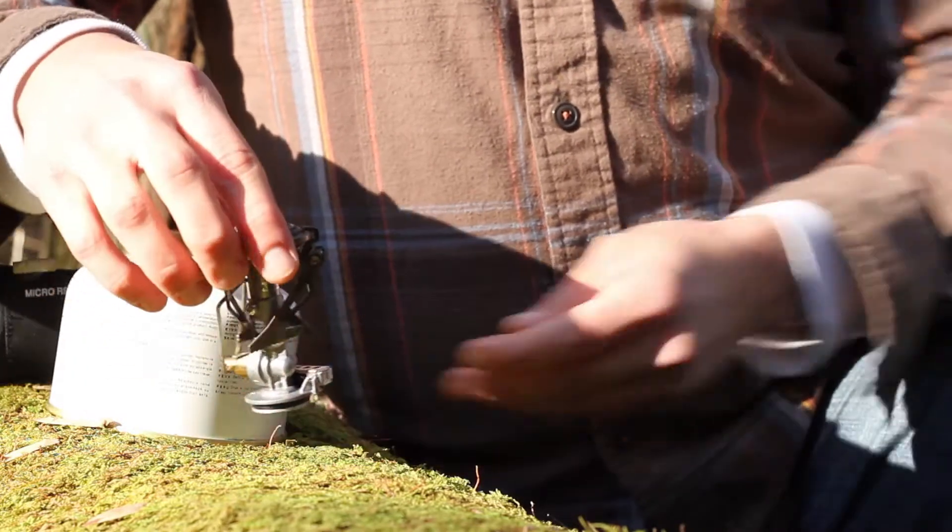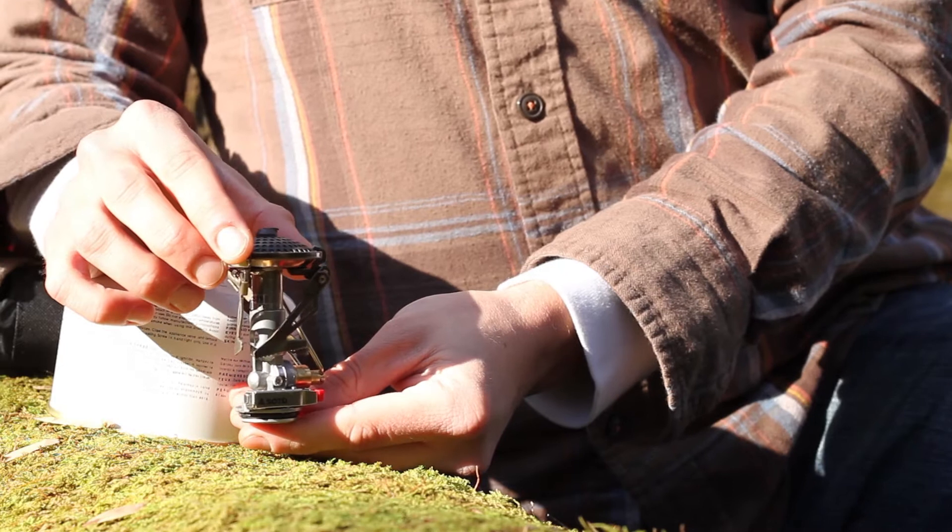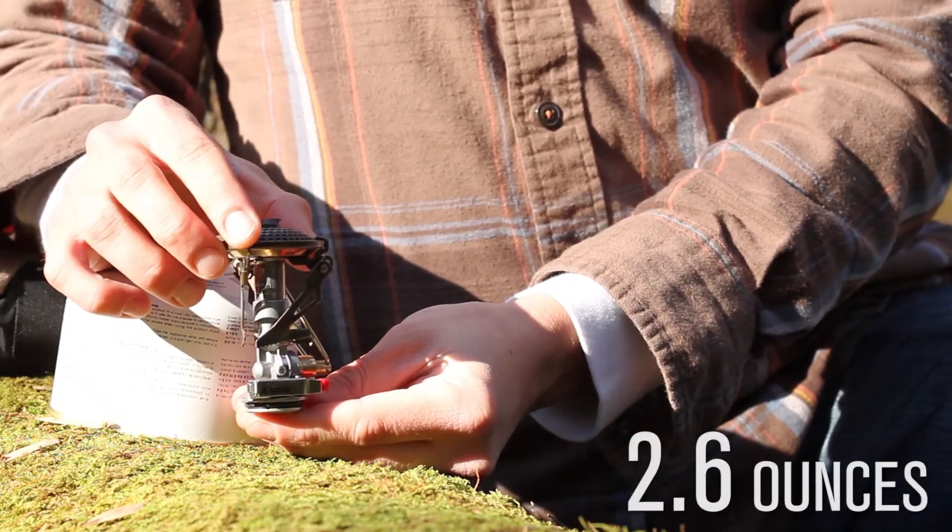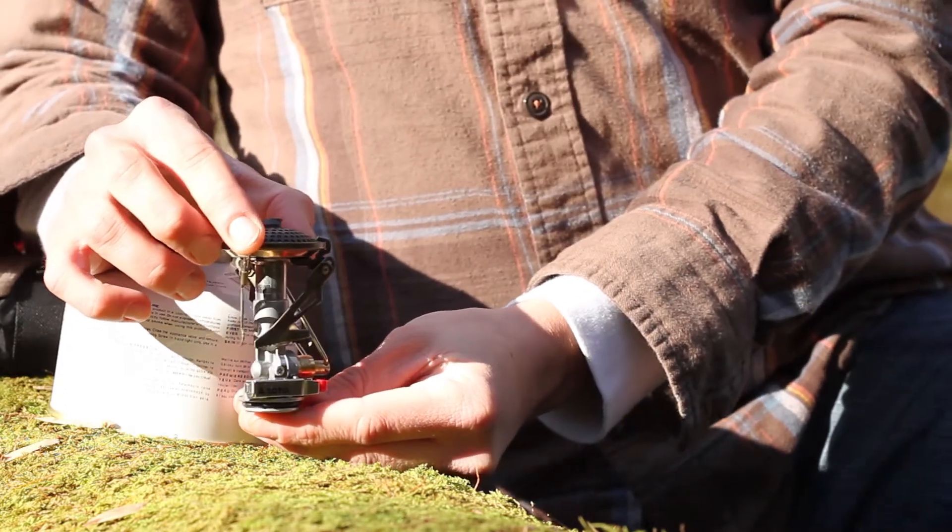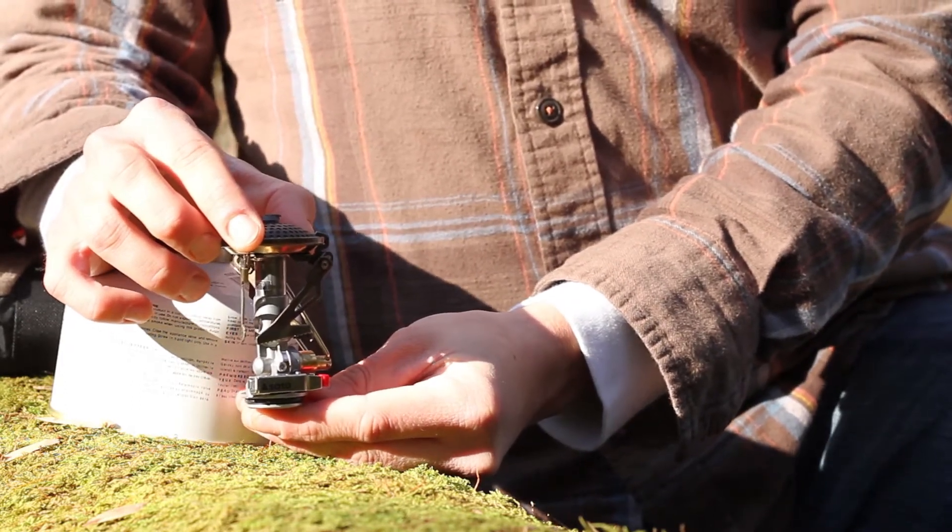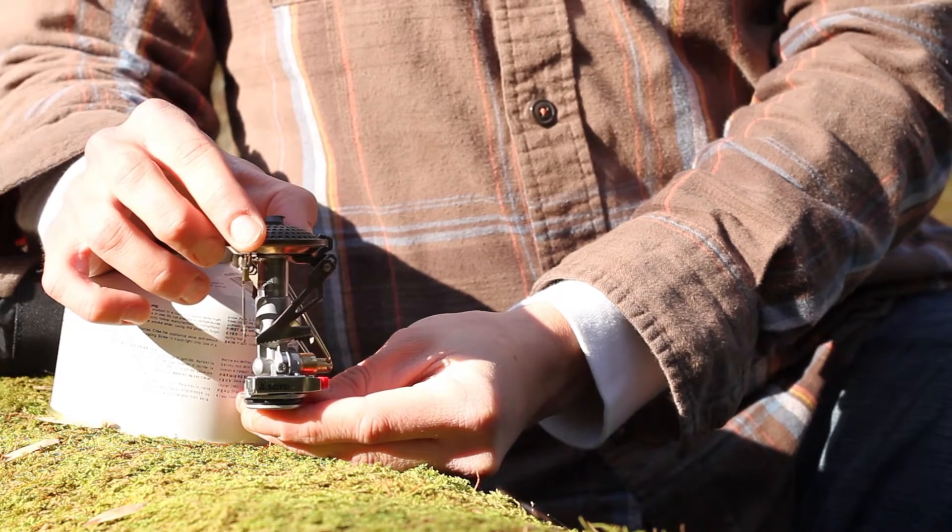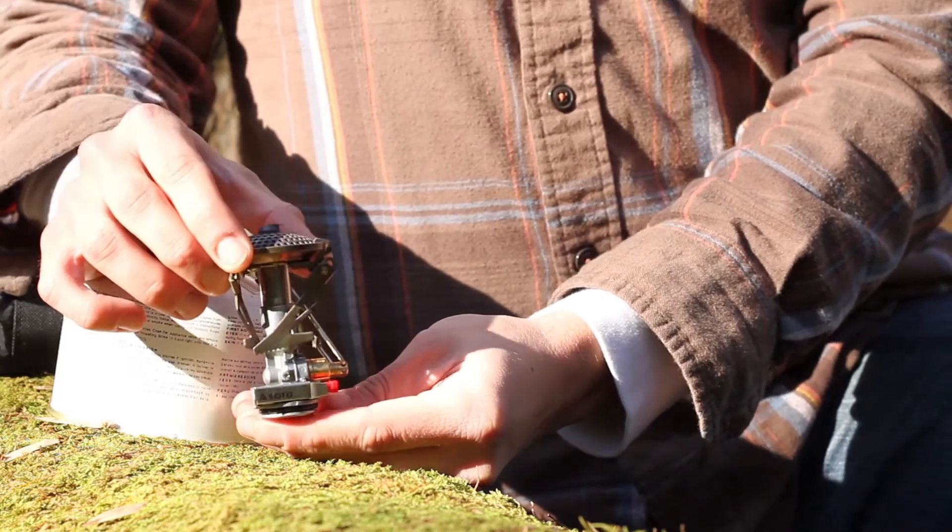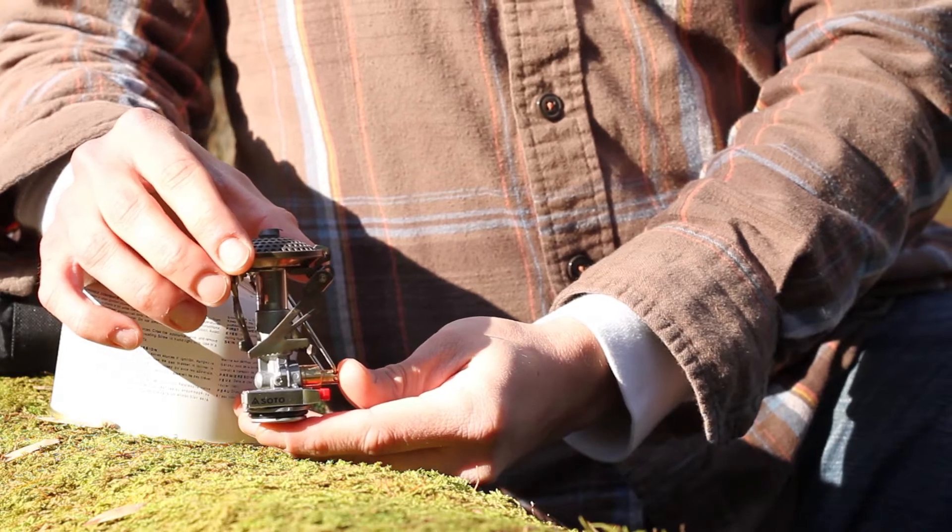So this stove is super light in the world of backpacking and top of canister stoves. This weighs only 2.6 ounces. I'm not the type of person that is so worried about weight that every tenth of an ounce matters to me, I'm only buying the lightest product and all that. But the stove is light and it's small. Most top of canister stoves are going to be light, relatively.